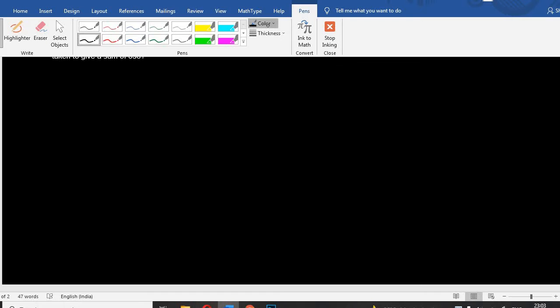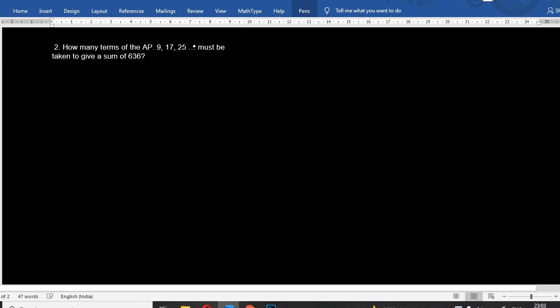Okay, let me do some of your homeworks. I'm just going to do two of them. First one: how many terms of the AP 9, 7, 25... must be taken to give a sum of 636? First term, we're writing down first term is 9, common difference is 17 minus 9.